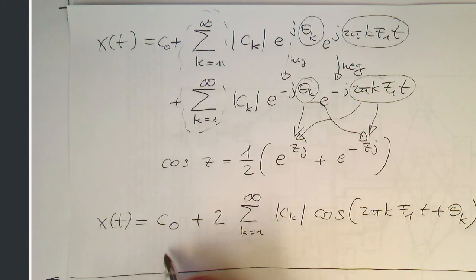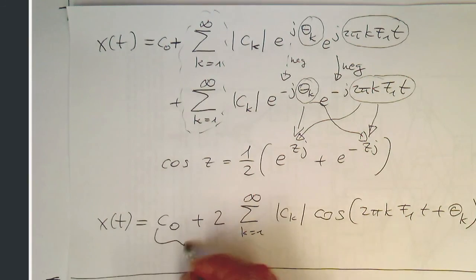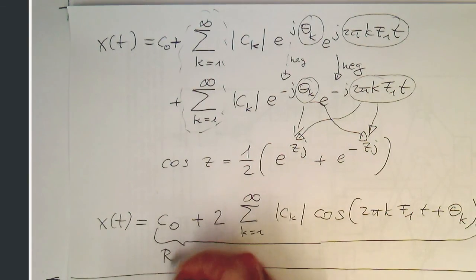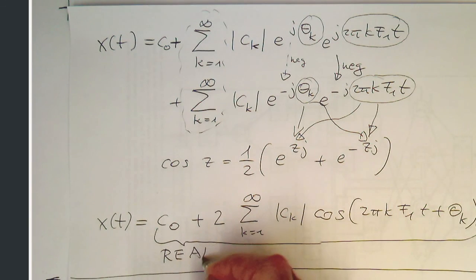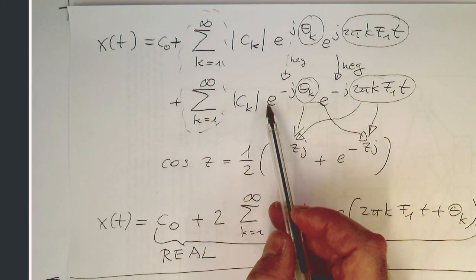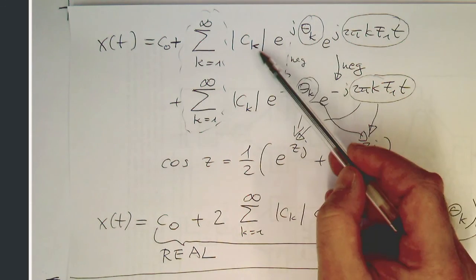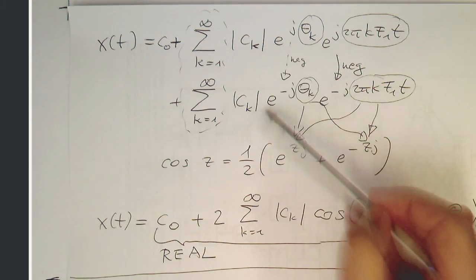And so now we see that this result here is obviously real, that's a real number, then the ck is real, the cosine is real, so the whole equation here is all real. So we got this out because of the symmetry in the coefficients, that these ck's here, that they are complex conjugates.